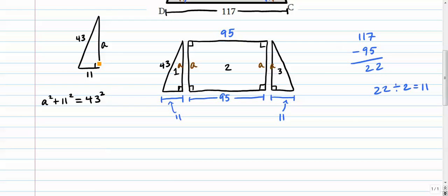So I'm gonna go a squared plus 11 squared equals 43 squared. Remember, the hypotenuse is across from the right angle. And all you do now is you just get your calculators out if you need to, that's totally fine.